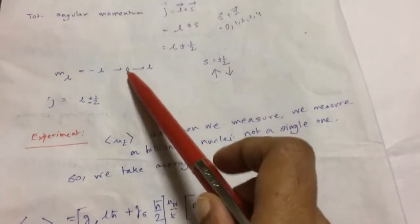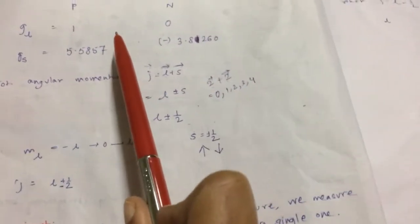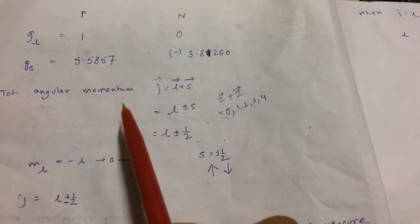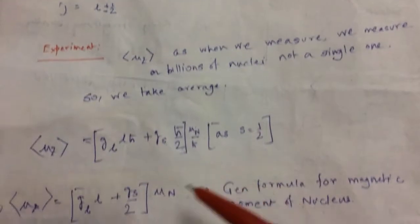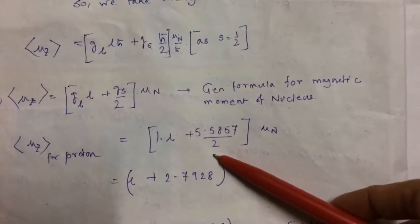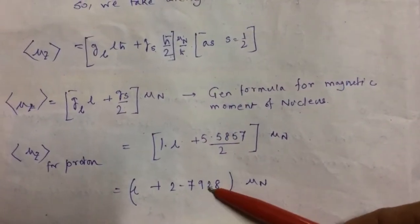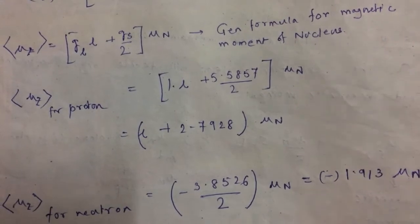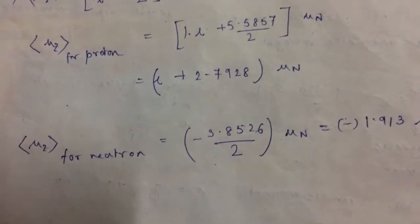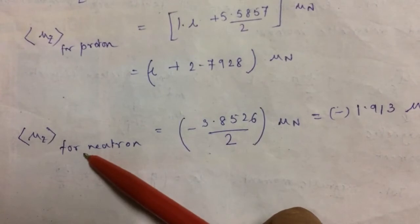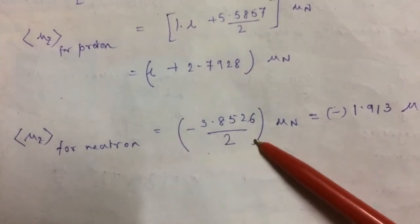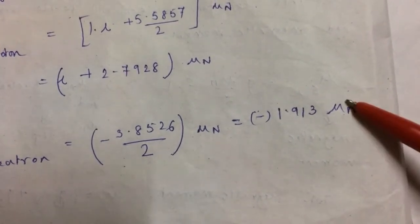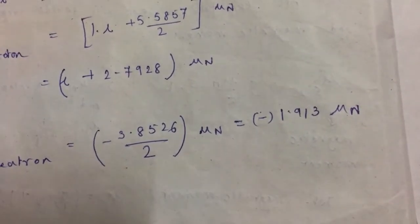Substituting the values of G_L and G_S corresponding to proton and neutron into the general formula, we get the average value of the magnetic moment for the proton and similarly we can find the average value of the magnetic moment for the neutron. Everything is expressed in units of the nuclear magneton.